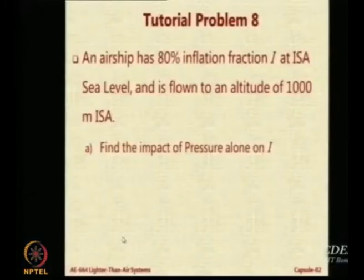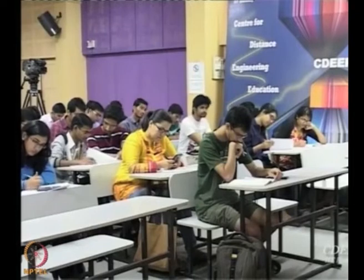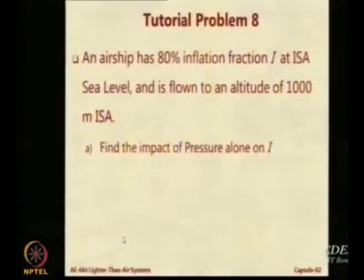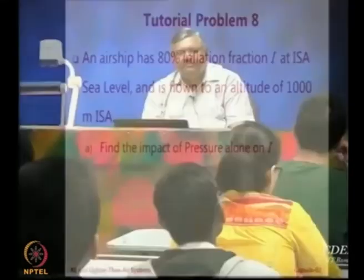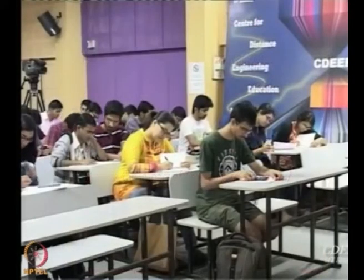You calculated the temperature at 1000 meters by subtracting 6.5 degrees from 288, and then got the pressure using P/P₀ = (T/T₀)^5.256, so delta equals T by P naught to the power 5 point something. Then in the formula I₂/I₁ = (P₂/P₁)(T₁/T₂), you have put in just the effect of pressure only, getting 90.2%. Now let us look at the impact of temperature alone — how much is that?